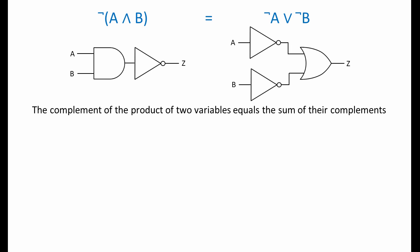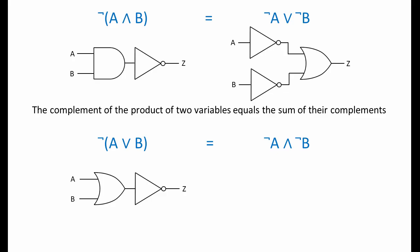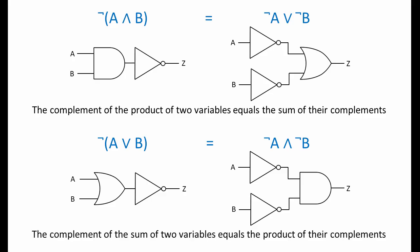De Morgan's theorem also states that this term is equivalent to this term, or to put it another way, that this circuit is equivalent to this one. The OR operation can be thought of as Boolean addition. When two numbers are added together, we get their sum. So we can say the complement of the sum of two variables equals the product of their complements.